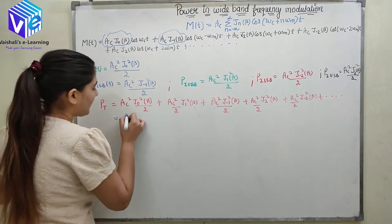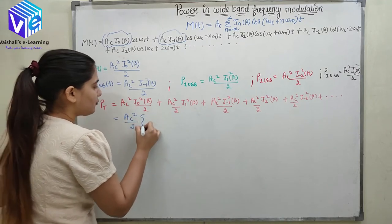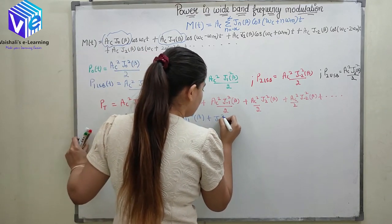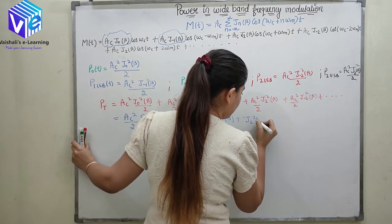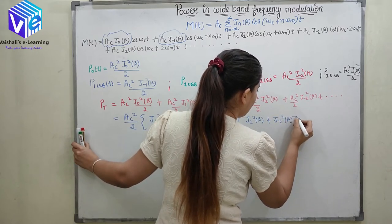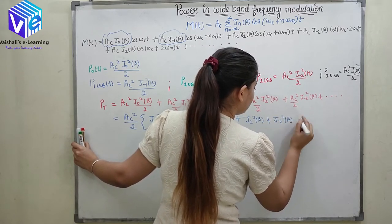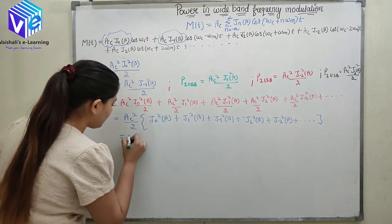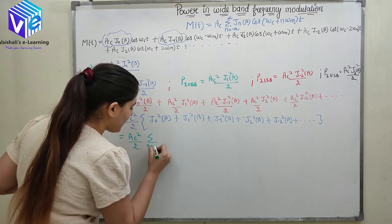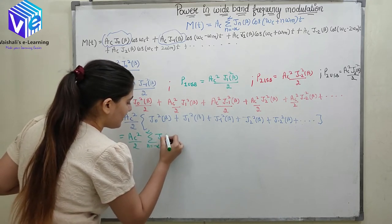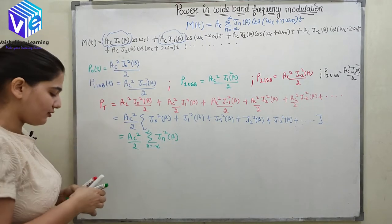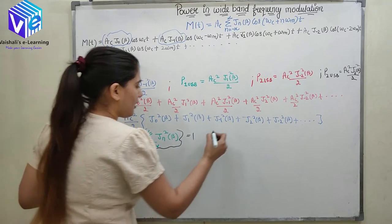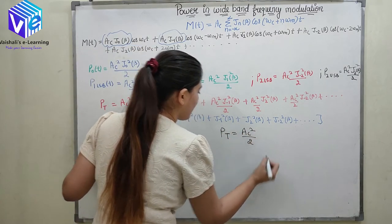Now to simplify, I can take AC²/2 as common, leaving J0²(β) + J1²(β) + J₋₁²(β) + J2²(β) + J₋₂²(β) + and so on. This can be represented as AC²/2 · summation N=−∞ to ∞ of Jn²(β). From the properties of Bessel functions discussed in my previous video, this summation equals 1, so total power equals AC²/2.